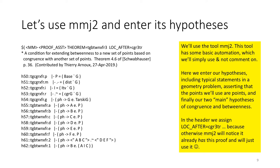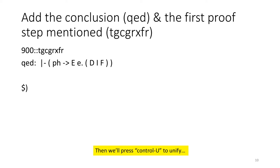We'll assign loc underscore after equals cgr3tr because otherwise MMJ2 will notice it already has this proof and we'll just use it. Then we're going to add the conclusion that has to have the step name QED, and then we're going to add the first proof step that was already mentioned. In the informal proof mentioned we were going to need to use something, and it has an MPE equivalent TG CGR XFR. So we'll just add a step, say we're going to use it, and then we'll use control U to unify it.